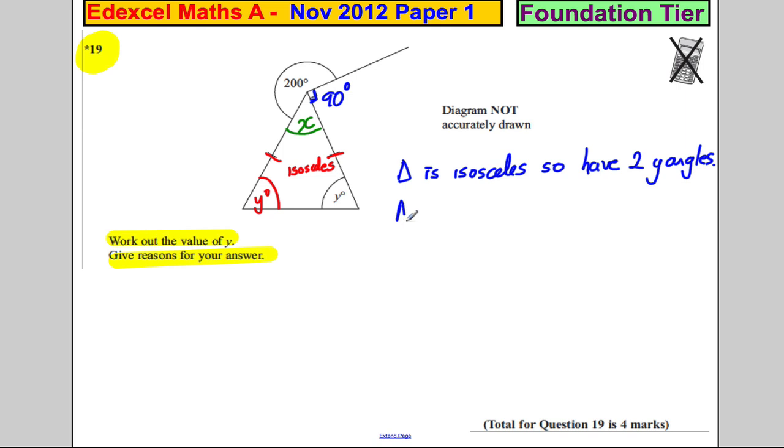So we could say that angles around a point add to 360 degrees. Therefore, X must be equal to 360, subtract the 200 and subtract this 90.